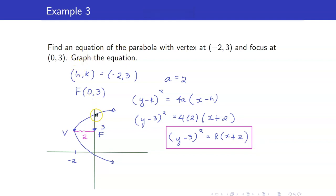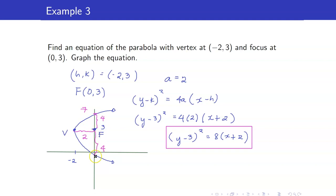Since we are asked to graph the equation, let us find the latus rectum. The latus rectum is 2a units away from the focus, so this is equal to 4 and this is equal to 4. So what is this? This is 3 plus 4, so this should be 7. And 3 going down by 4 units gives negative 1. Therefore, the endpoints of your latus rectum are the points (0, 7) and (0, negative 1).